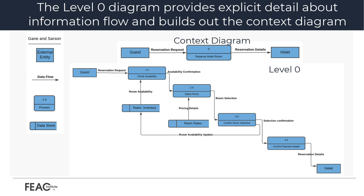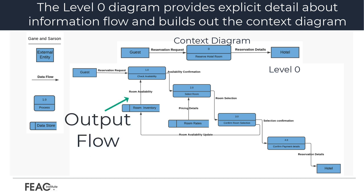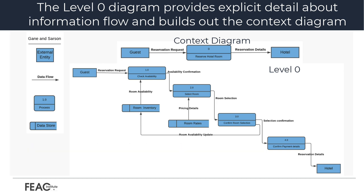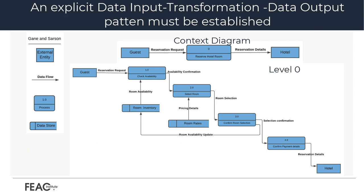The datastore does not generate any operations but simply holds data for later access. Data stores could consist of files held long term or a batch of documents stored briefly while they wait to be processed. Input flows to a datastore include information or operations that change the stored data, while output flows from a datastore would be data retrieved from the store itself. The level 0 DFD provides a more detailed decomposition of the context level diagram. Regardless of the title, there is a specific input, transformation, output pattern that must exist in order for the DFD to show the flow of information.